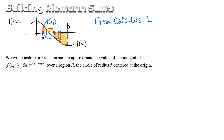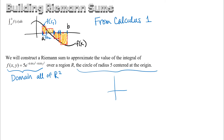The basic idea here is that we want to extend that to multivariable functions. In this case I've got a function of two variables, and one important thing about this function of two variables is that its domain is all of R2, so that means we can use any region that we want to think about integrating this function over. This particular region that we're going to start with as an example is a circle of radius 5 centered at the origin, and the idea is that instead of chopping up the interval from a to b, we're going to chop up this circle of radius 5 centered at the origin.